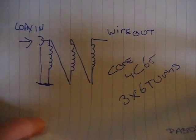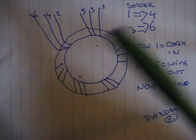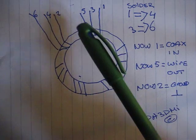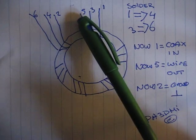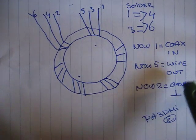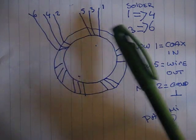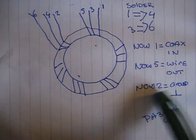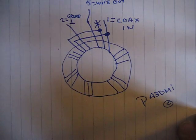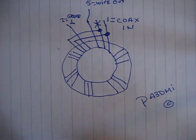Number 1 is coax in. Number 5, that's the last one on the top, goes to the wire out. And number 2, that's the first, the first turn 6 times, is your ground. Scrape off the lacquer off the coil and solder it like this.